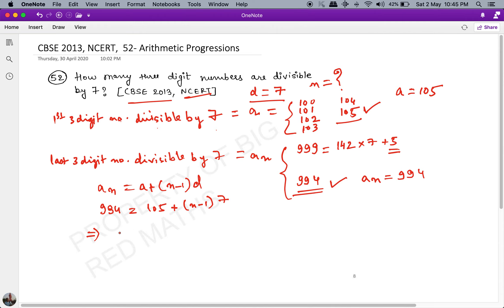994 - 105 = 889. So 889 = (n-1) × 7, which implies n - 1 = 889 ÷ 7.